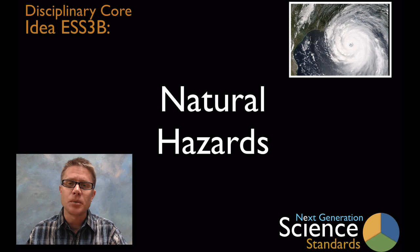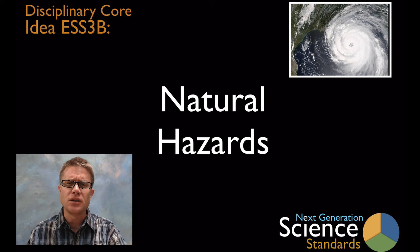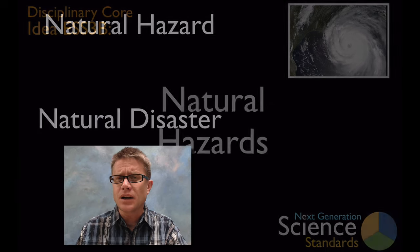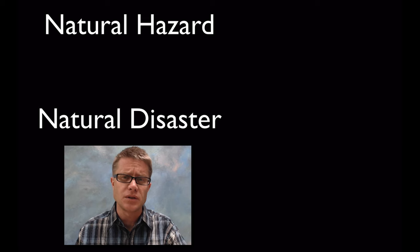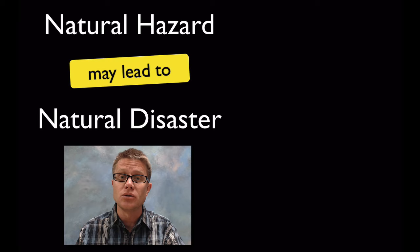Hi, it's Paul Andersen and this is disciplinary core idea ESS3B on natural hazards. A natural hazard is an earth process that can eventually affect humans in a negative way. Sometimes we confuse the term natural hazard with the term natural disaster. A natural hazard may eventually lead to a natural disaster.